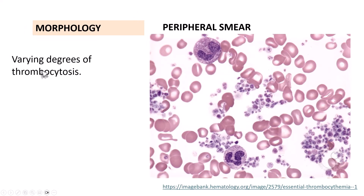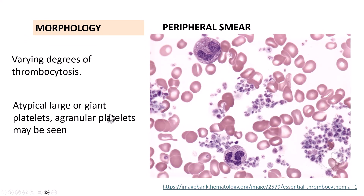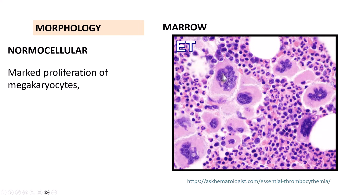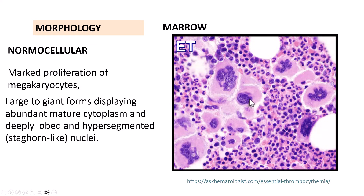Morphologically, on the peripheral smear you see varying degrees of thrombocytosis — more than 4.5 lakh per cubic mm — along with atypical large giant platelets, and sometimes platelets without granules. The bone marrow is very pathognomonic in its findings: it is normocellular for that individual's age, though cellularity may be slightly increased. There is marked proliferation of megakaryocytes of irregular sizes and shapes — large to giant forms with abundant mature cytoplasm and deeply lobed, hypersegmented stag-horn type nuclei.